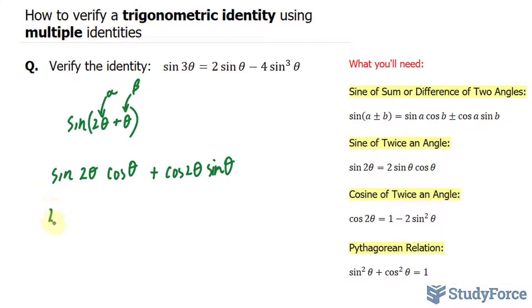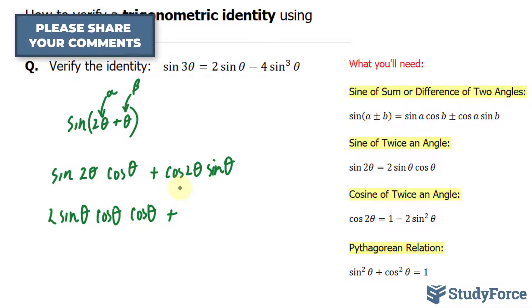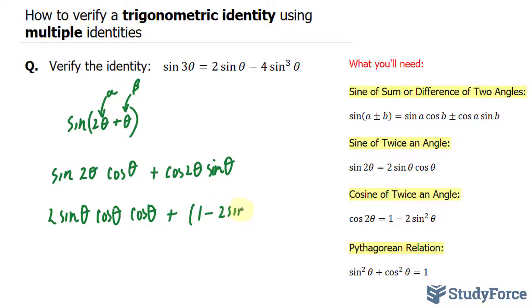So this becomes 2 sin θ cos θ times cos θ. These will be multiplied in a moment. And cos 2θ becomes (1 - 2 sin²θ) times sin θ.